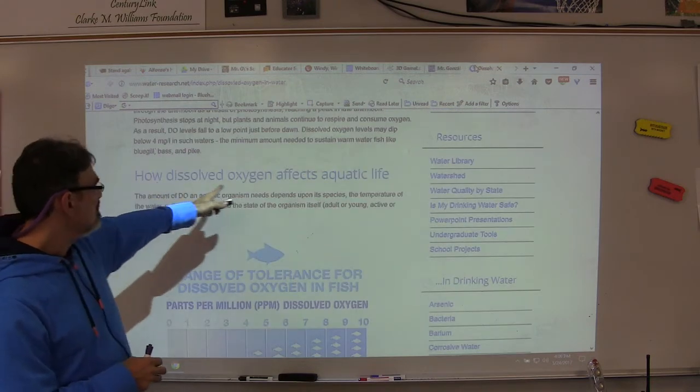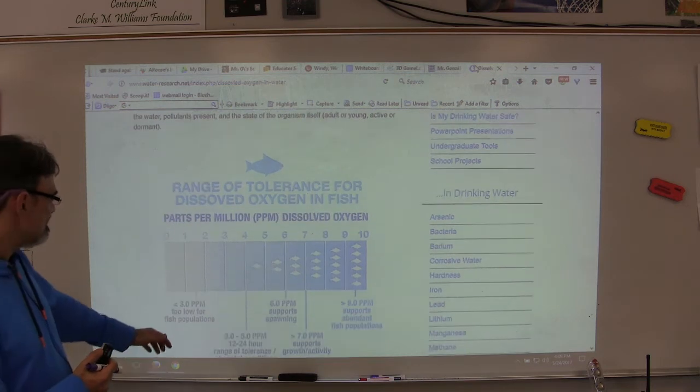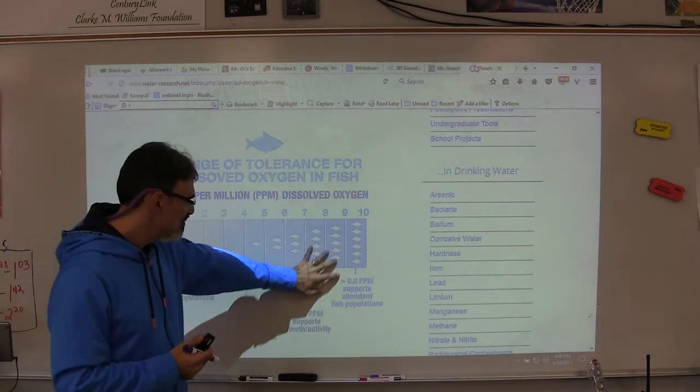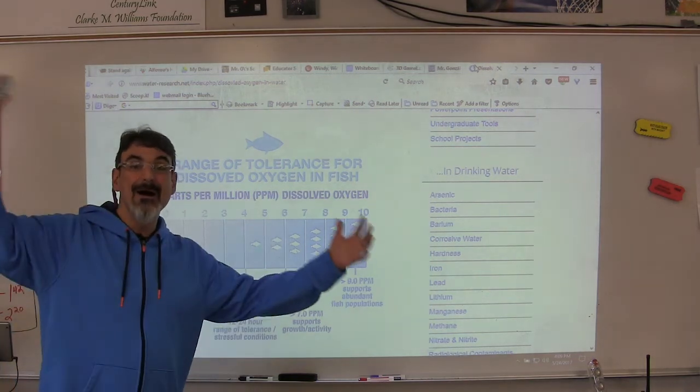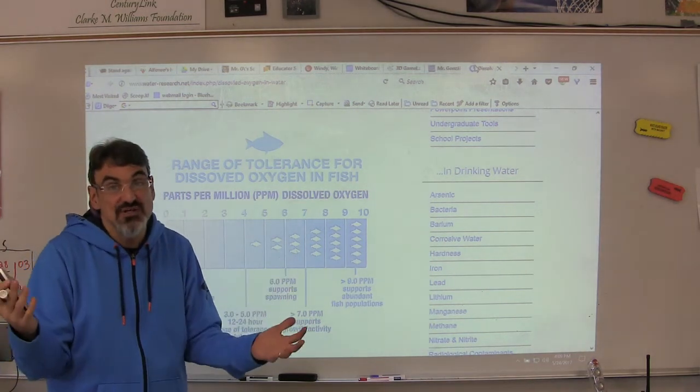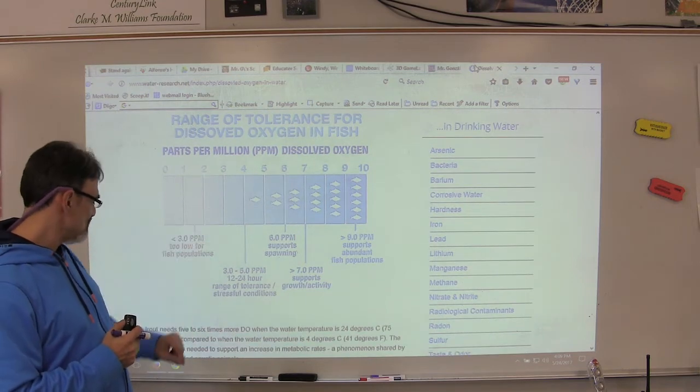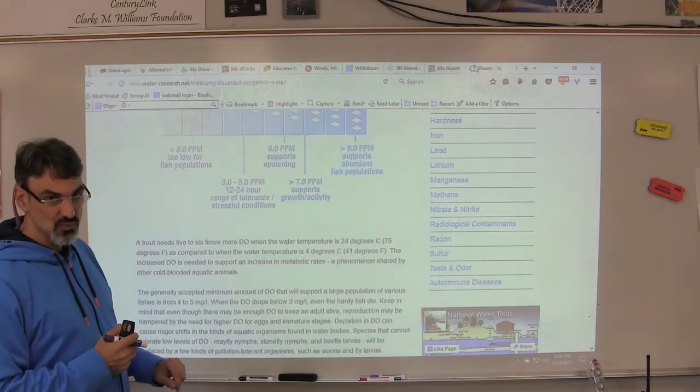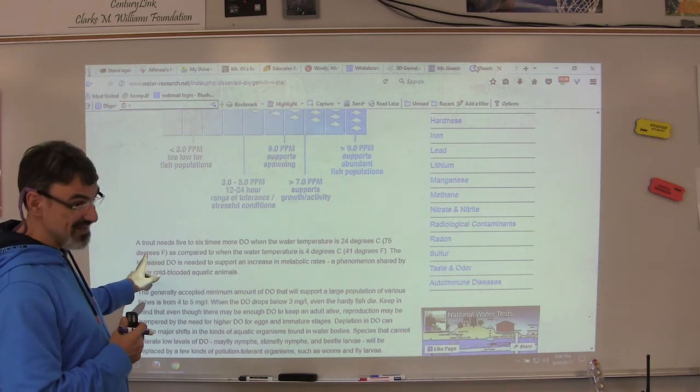So this has how does dissolved oxygen affect aquatic life, and it's got a nice chart here for you to see that the more dissolved oxygen, the more numbers of fish you can have in that part of the stream. So this is kind of obvious, but it's a great way to show that that is important to have that much oxygen.